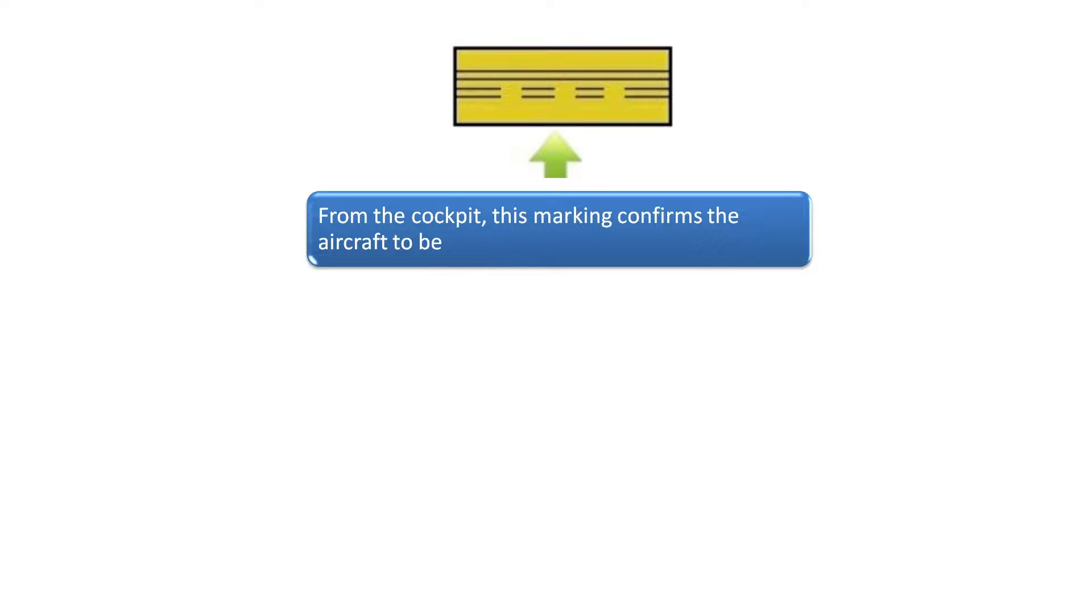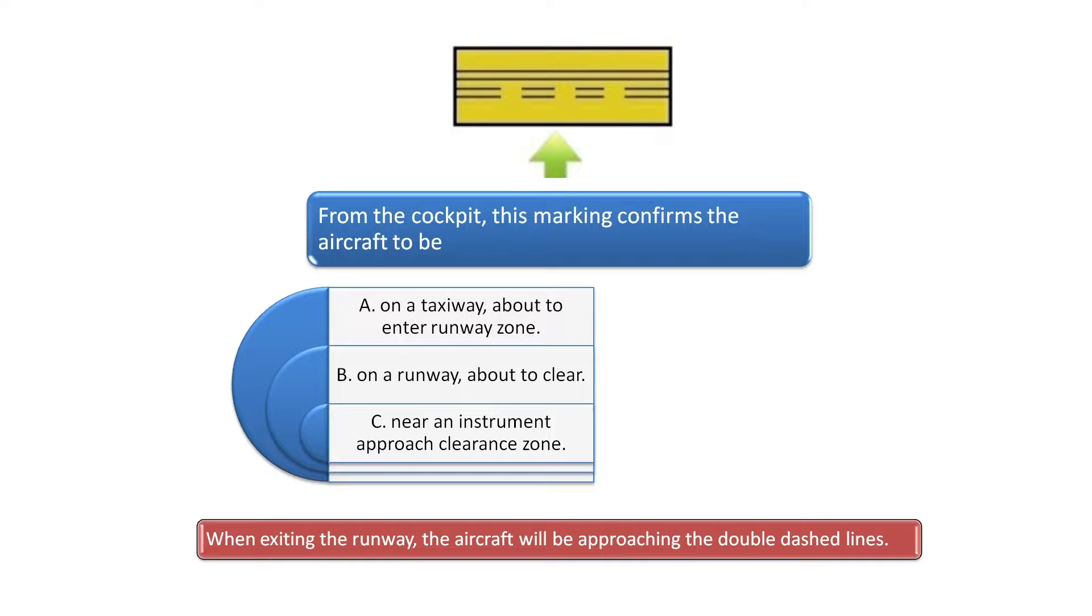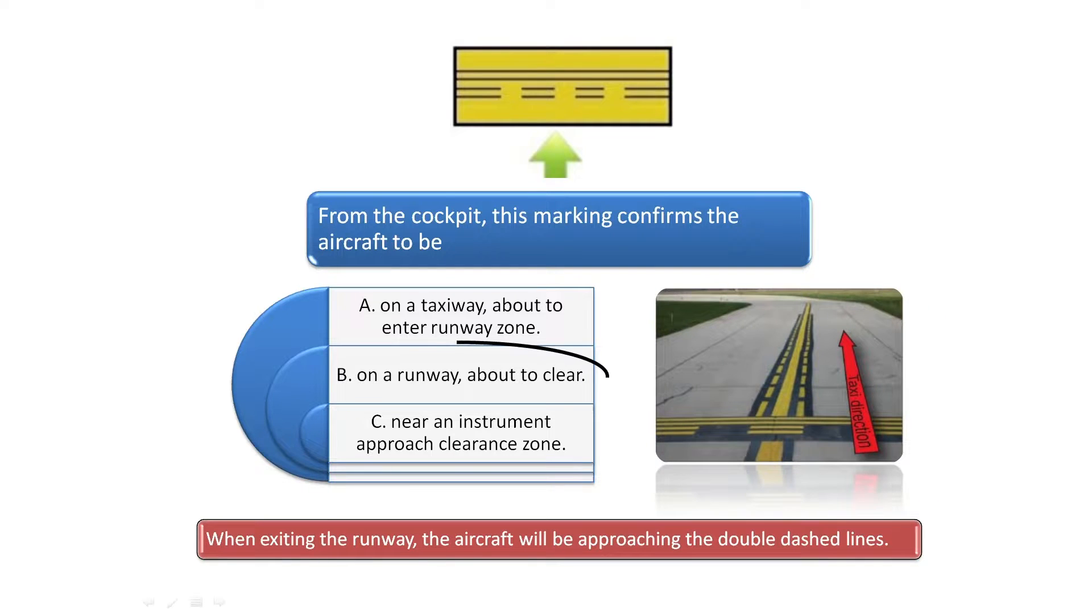Question 8 asks. From the cockpit, this marking confirms the aircraft to be. The runway marking at the top of the screen indicates a runway boundary marker. The pilot on the dashed side of the lines would be on a runway about to exit and a pilot on the solid side of the lines would be on a taxiway or runway waiting for ATC clearance to proceed onto the runway. The correct answer is B, on a runway about to clear.